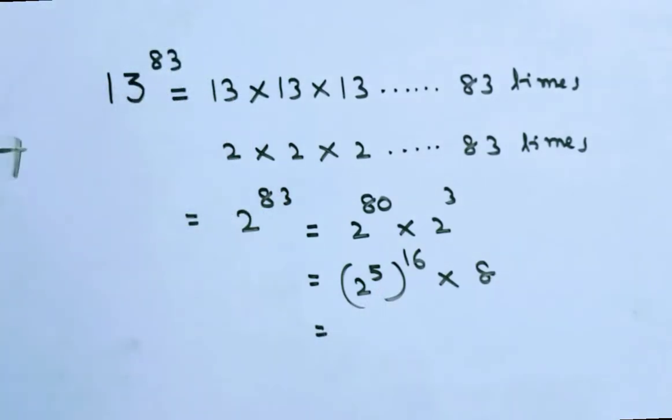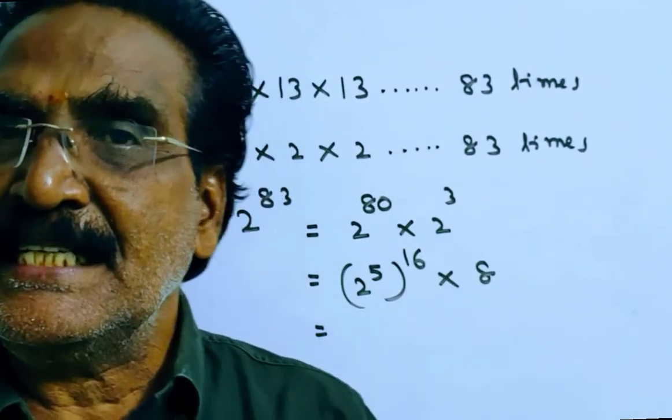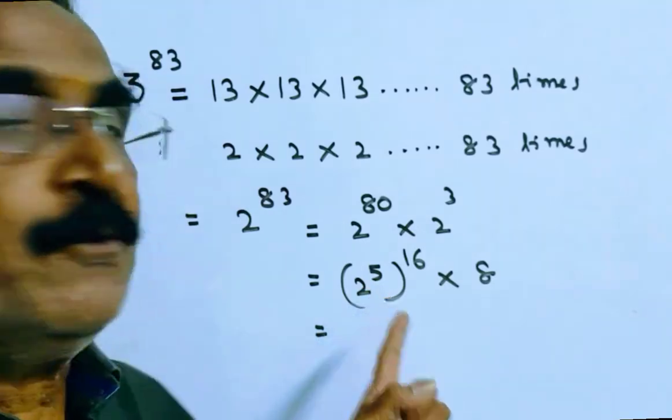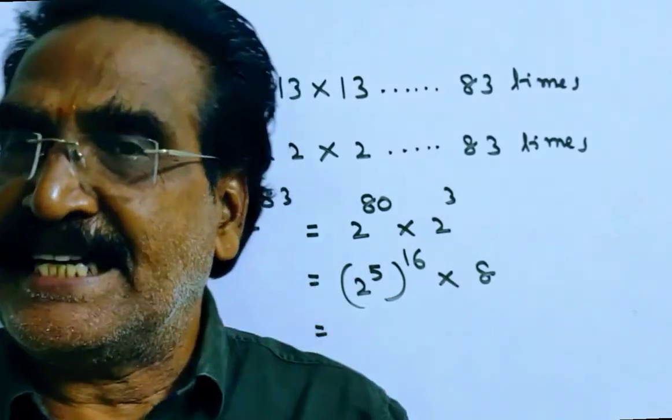Friends, 2 power 5 means 32. When 32 is divided by 11, the remainder is minus 1.